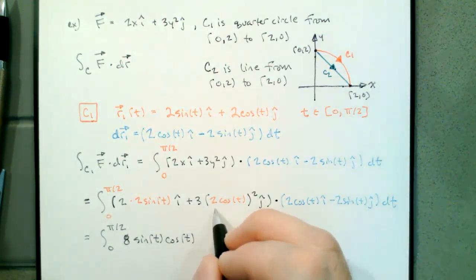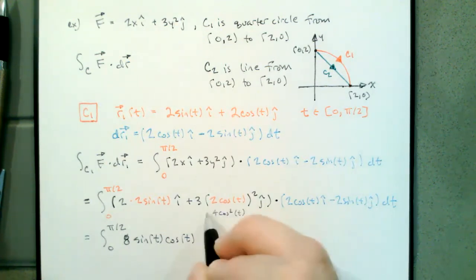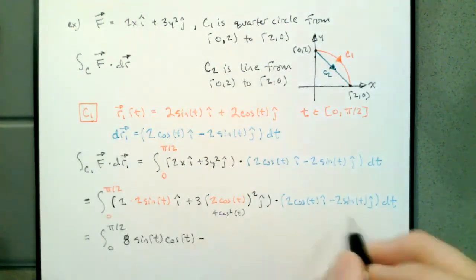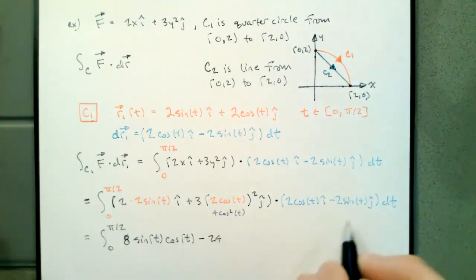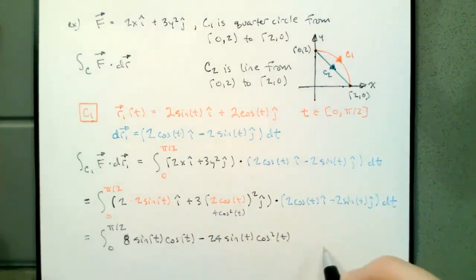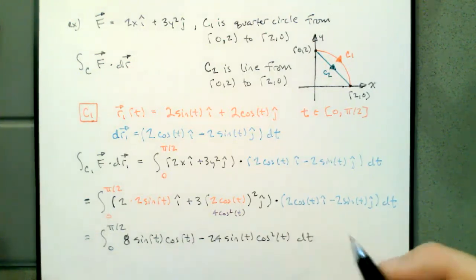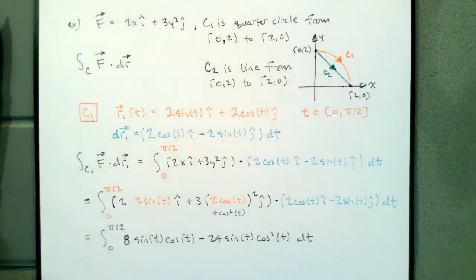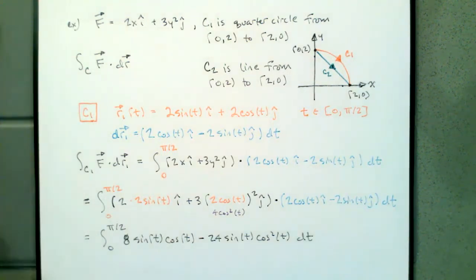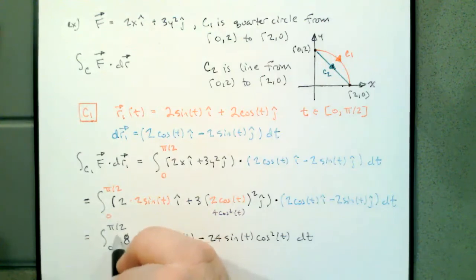So I get 3 times (2 cos t)² = 12 cos² t, and then it's going to be minus when I multiply, so minus 12 times 2 = 24 sin t cos² t. So the integral becomes the integral from 0 to π/2 of (8 sin t cos t − 24 sin t cos² t) dt. We're calculating a dot product, so the i and j go away and we get a scalar.